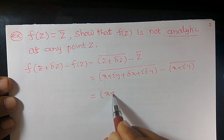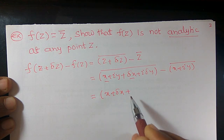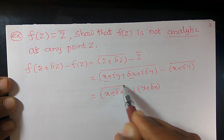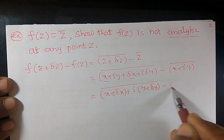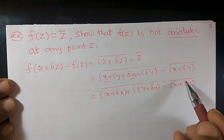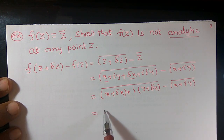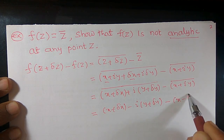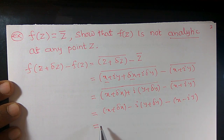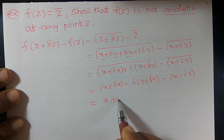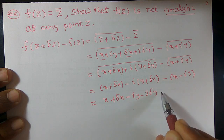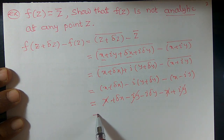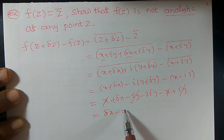This can be written as (x + Δx + i(y + Δy))̄ minus (x + iy)̄, which equals (x + Δx − i(y + Δy)) − (x − iy). Expanding: x + Δx − iy − iΔy − x − iy + iy. The remaining terms give us Δx − iΔy.